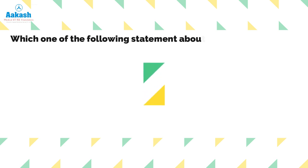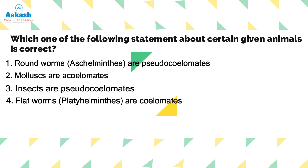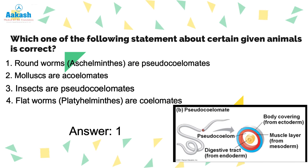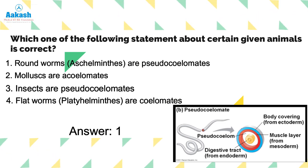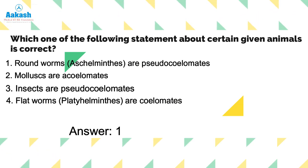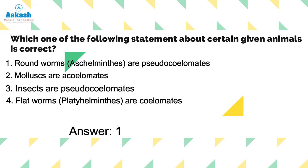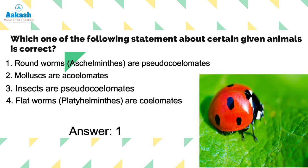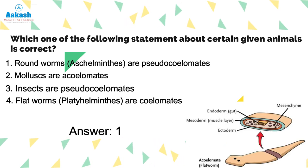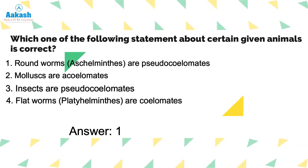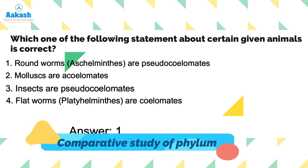The next question: which one of the following statements about certain given animals is correct? First, aschelminthes are pseudocoelomate — this is correct because roundworms are pseudocoelomate. In the second option, molluscs have a true coelom — this is also correct. In the third statement, insects are pseudocoelomate — this is wrong because insects have a true coelom. In the fourth option, flatworms are pseudocoelomate — we compare phylum by phylum to determine the correct answer.